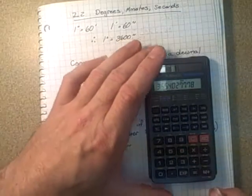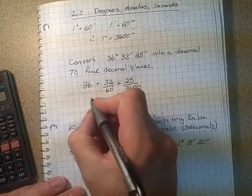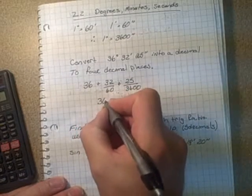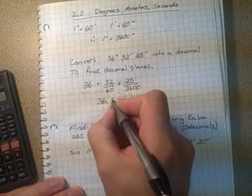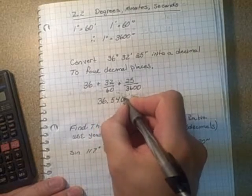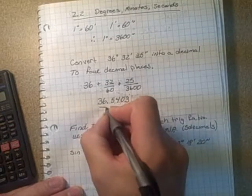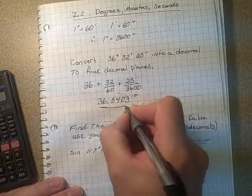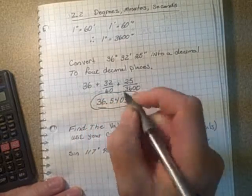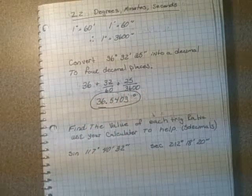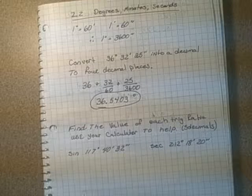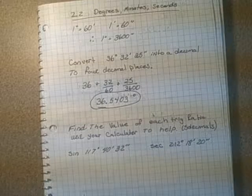So to four decimal places I end up getting 36.5403 degrees. That would be how you do a conversion from a degree with minutes and seconds to a degree with a decimal in it.